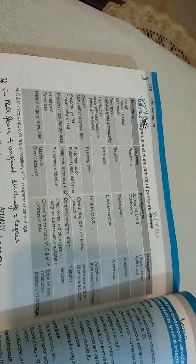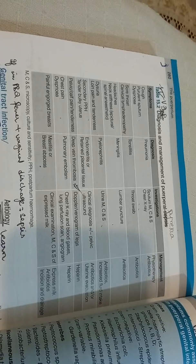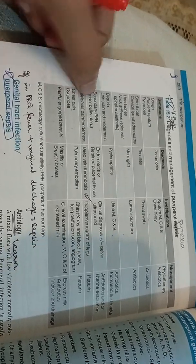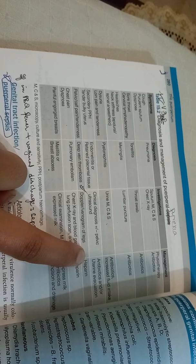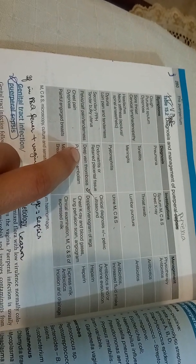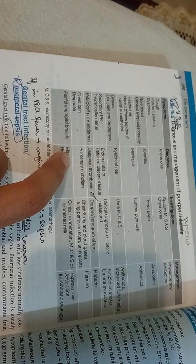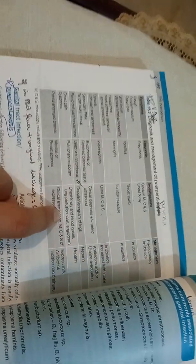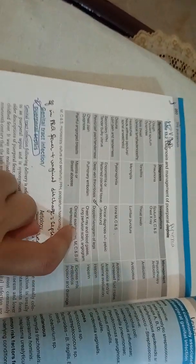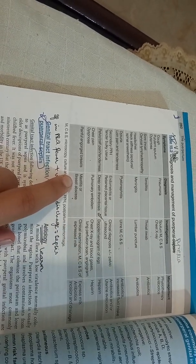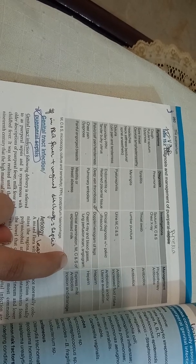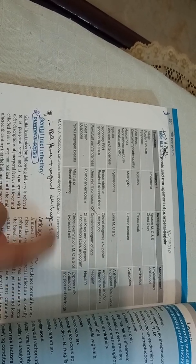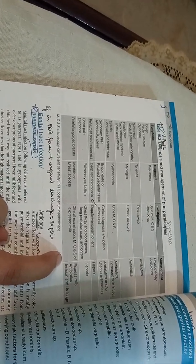Management overview: urine microscopy, culture and sensitivity, antibiotics. For secondary PPH with bulky tender uterus — endometritis or retained placental tissue — clinical diagnosis plus ultrasound, antibiotics, and uterine evacuation. For pelvic pain and calf tenderness: DVT — Doppler venogram and heparin. For chest pain and dyspnea without purulent sputum: pulmonary embolism — lung perfusion scan, angiogram, and heparin. For painful breast engorgement or mastitis: express milk, microscopy, culture, and antibiotics.